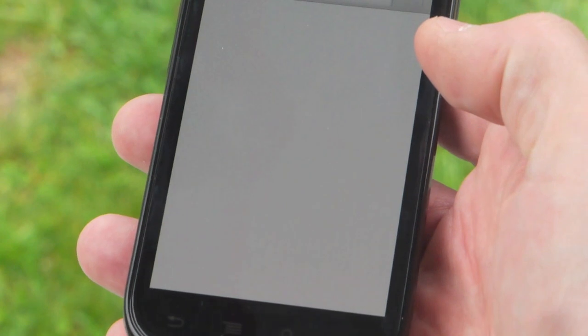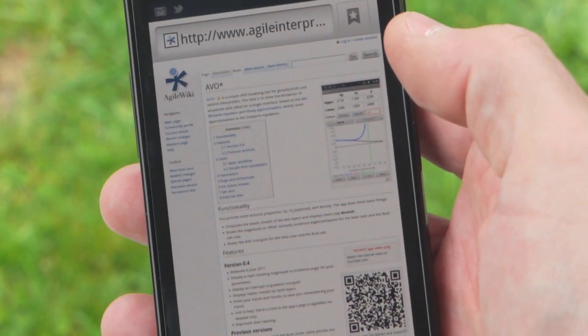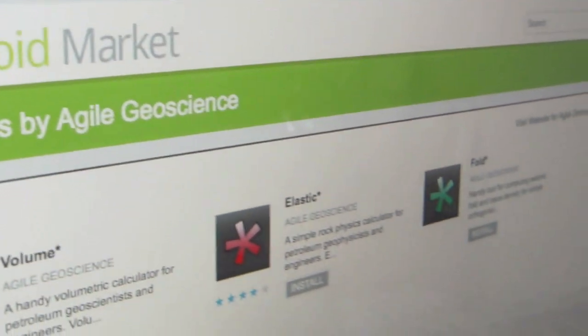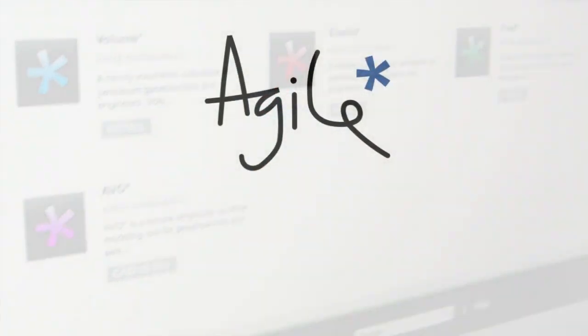A quick tap of the help button will bring up the Agile Wiki page for the app. There it is, it's available in the Android market. Go get it, let us know what you think. Thanks for watching.